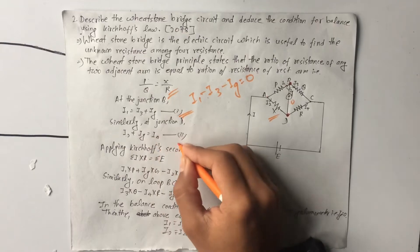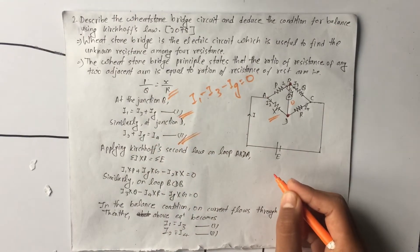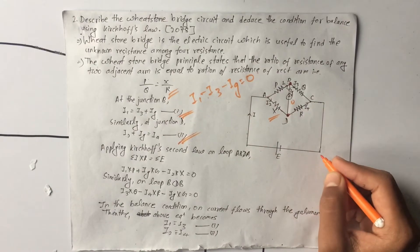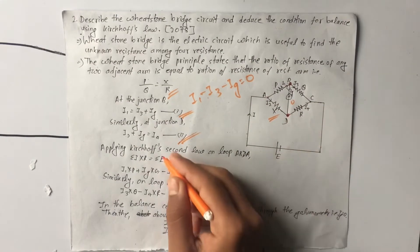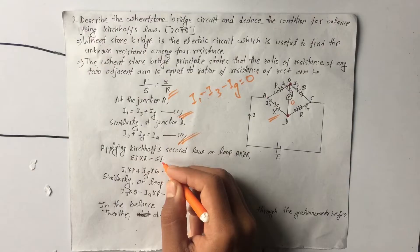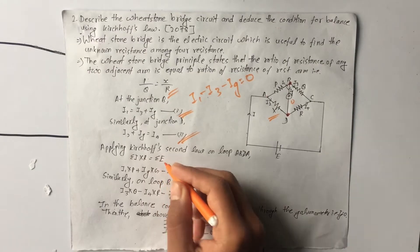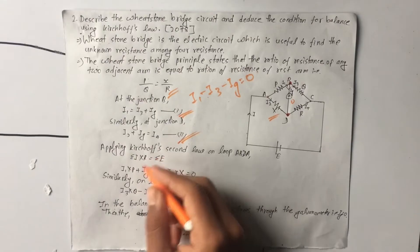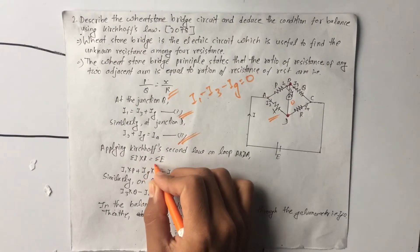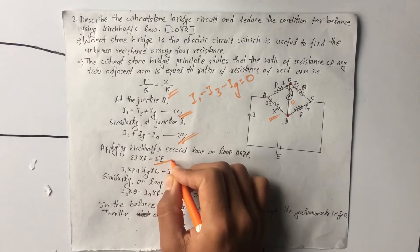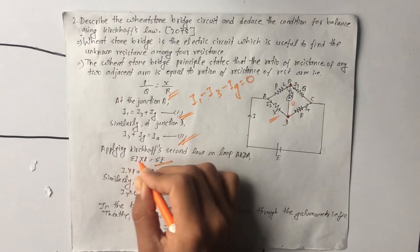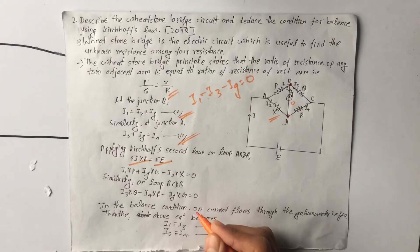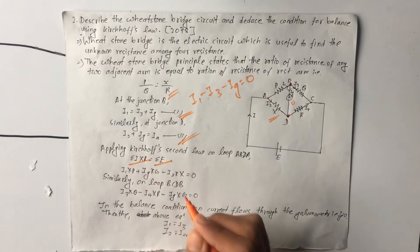Minus plus I4 — this is equation 2. Now applying Kirchhoff's second law: the summation of EMF is equal to the product of current and resistance. That is, summation of EMF equals summation of the product of current and resistance.